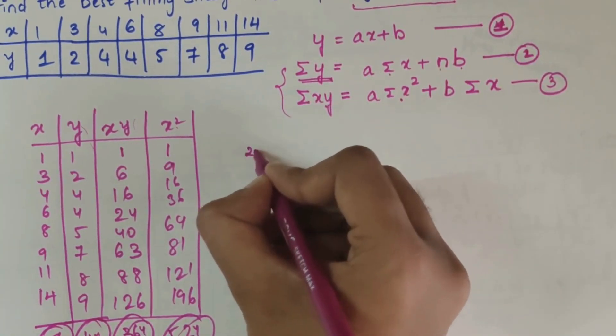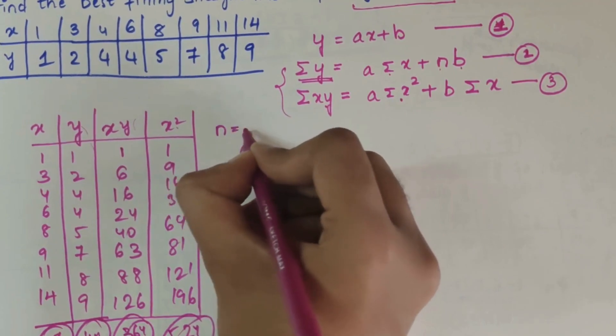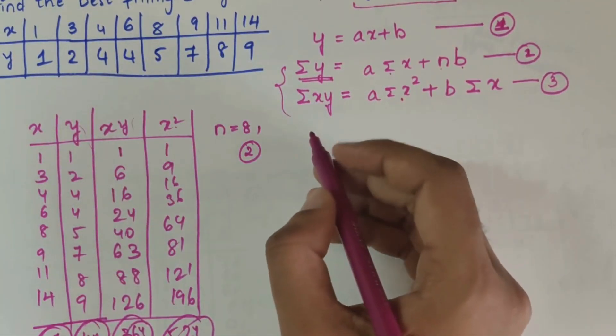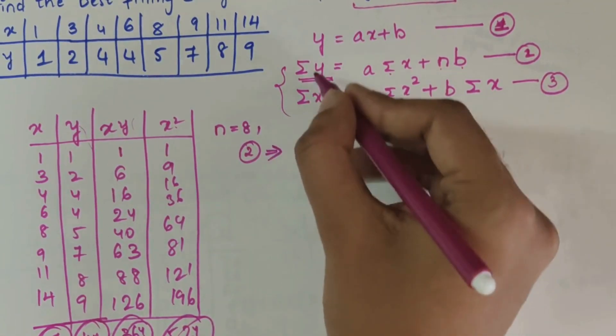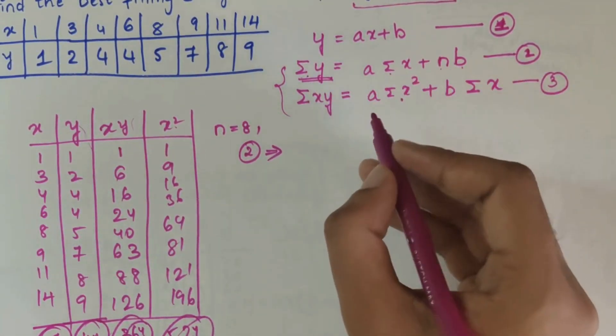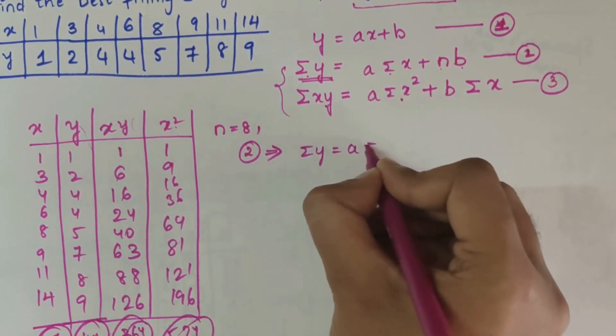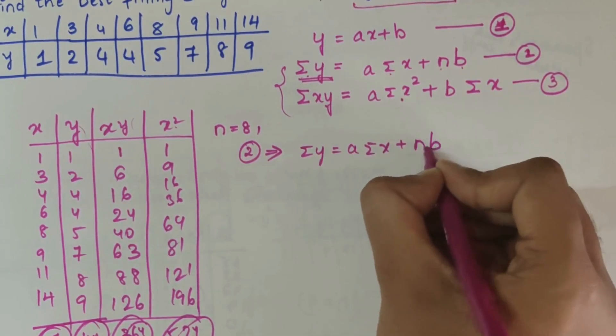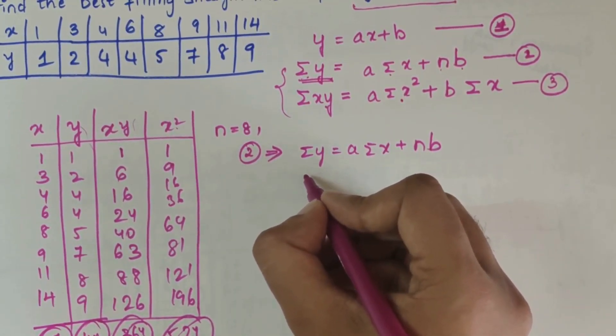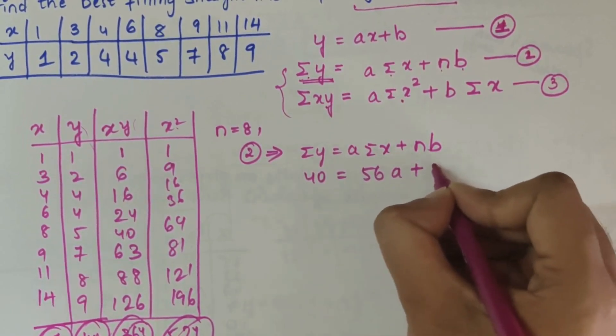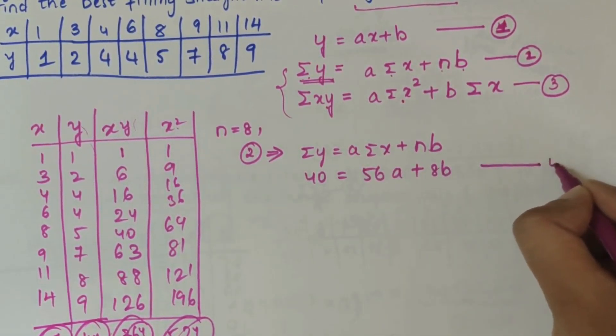n value is 8 here because there are 8 total values. Let us proceed now. Substitute the obtained values in the second equation. You get summation y equals a summation x plus nb. Summation y is 40 equals 56a plus 8b. This is our fourth equation.